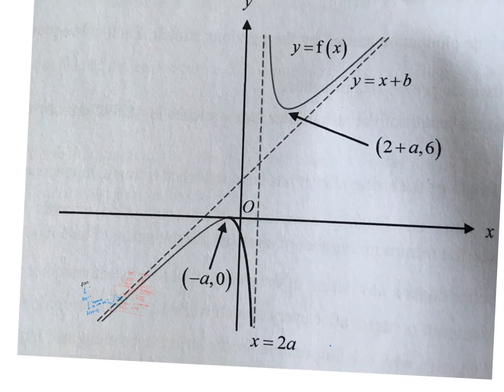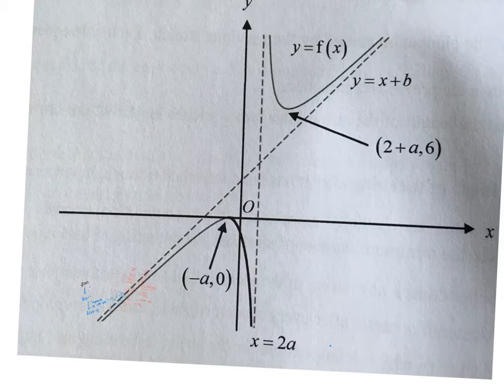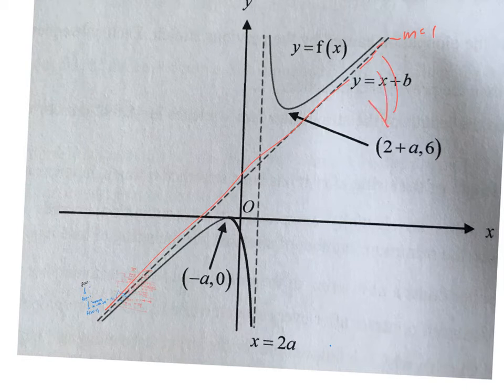For it not to cut y equals m — so you can see it's quite straightforward. Basically, if my line is here at m equals 1, and if I go in this direction my m is actually decreasing, going towards a flatter gradient.